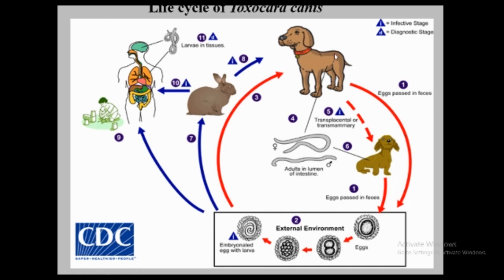Considering the life cycle of Toxocara canis: adult worms reside in the dog's small intestine, eggs are passed in the stool, and they need the environment for further development. Eventually the embryonated egg containing larva develops in the external environment. If ingested by a susceptible host the life cycle continues, but if accidentally ingested by paratenic hosts like rabbits or children — especially through contamination of food and drinks — the larva develops, penetrates the gut, and is carried to the liver and other organs, distributing to different viscera to produce granuloma.